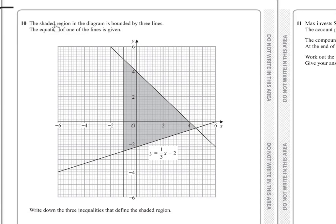Number 10: The shaded region in the diagram is bounded by three lines. The equation of one of the lines is given. Write down the three inequalities that define the shaded region. We can start with the given line.